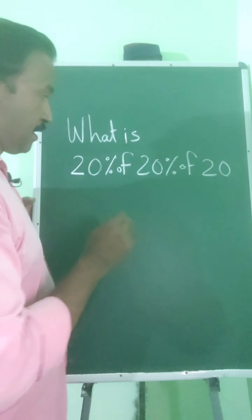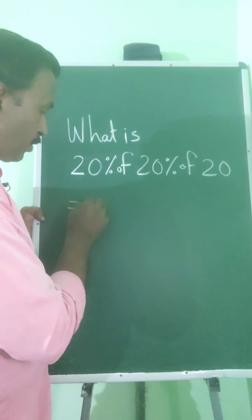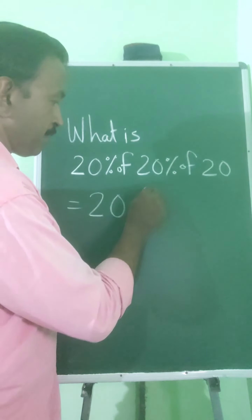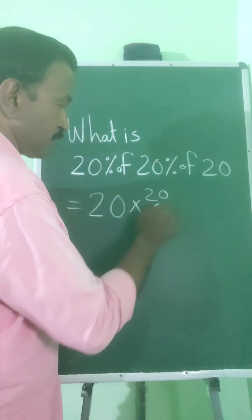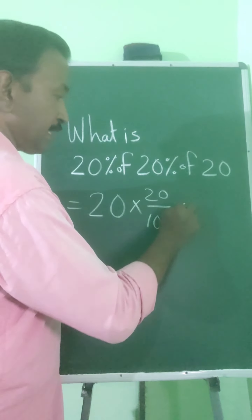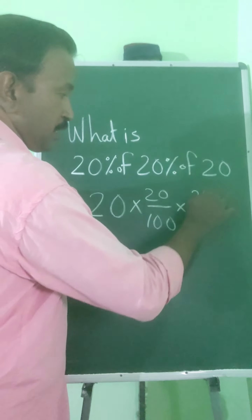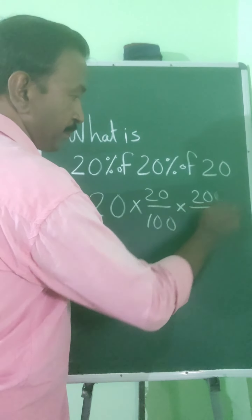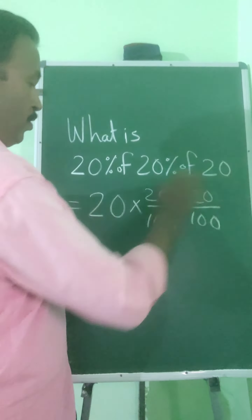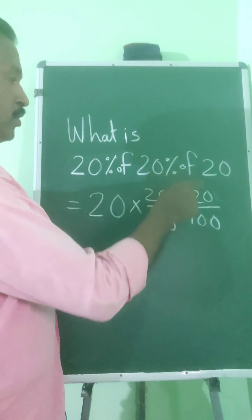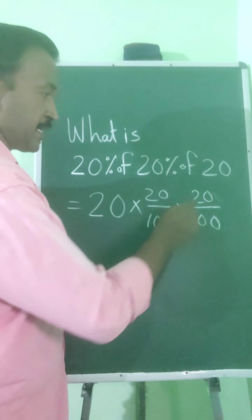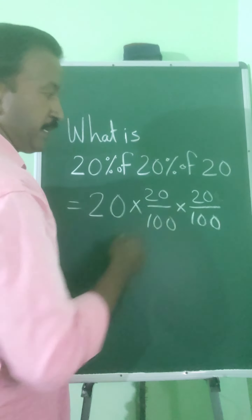Now we can read the answer. It is equal to 20% of 20% of 20, which is 20 into 20 by 100 into 20 by 100.